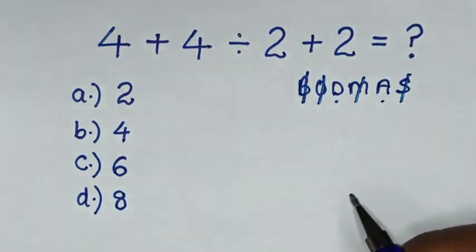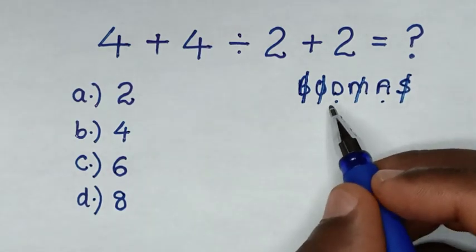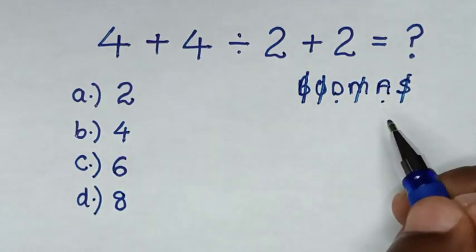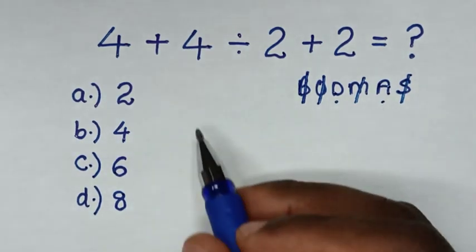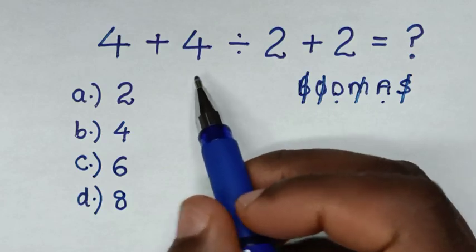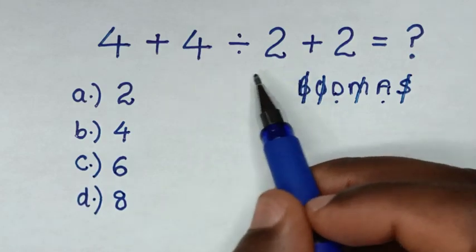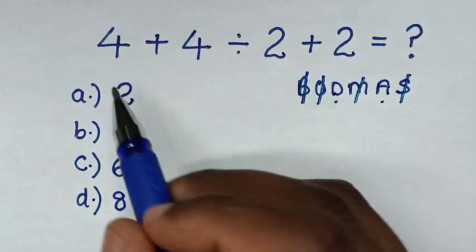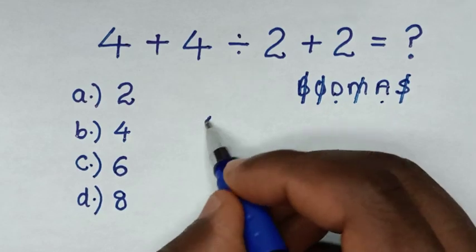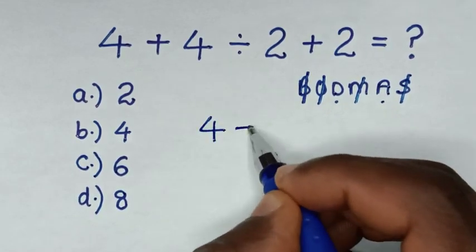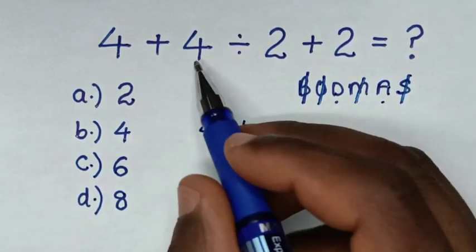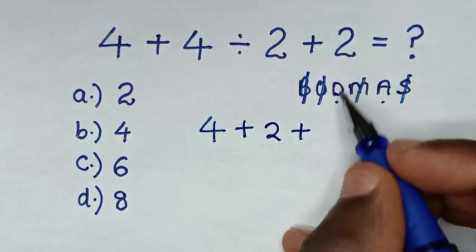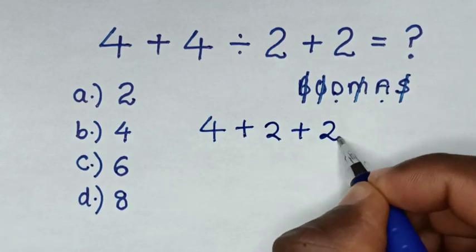So we start to deal with this division, then addition. From the division, we have 4 divided by 2 which is 2. So it will be 4, then plus 2, then plus 2.